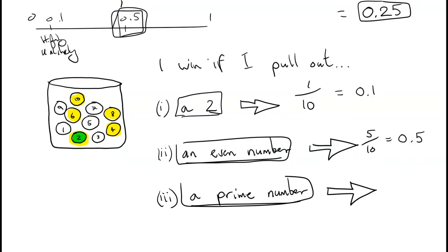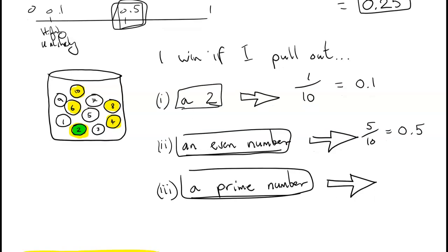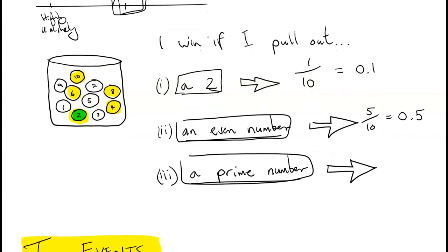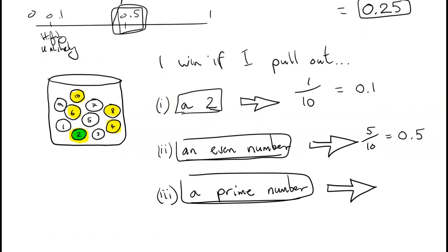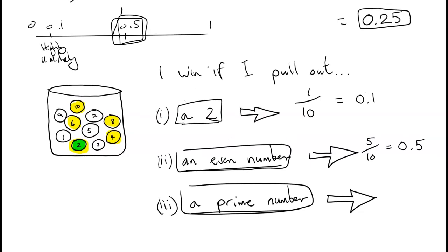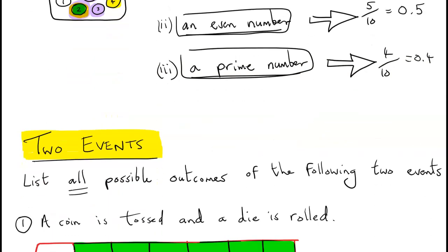What if I win if I get a prime number? Prime numbers from 1 to 10 are 2, 3, 5, and 7 — there are 4 of them. So the probability of winning is 4 over 10, or 0.4. Again, it's unlikely.